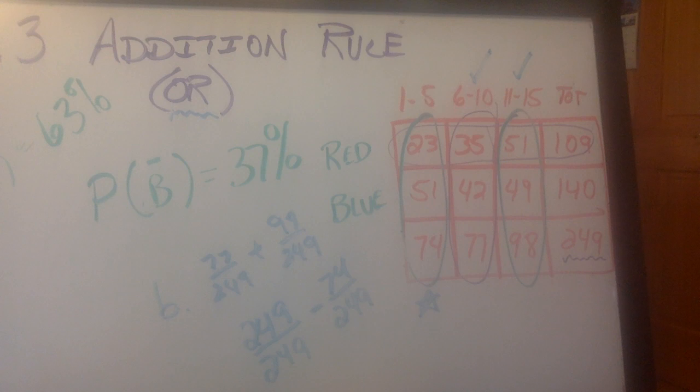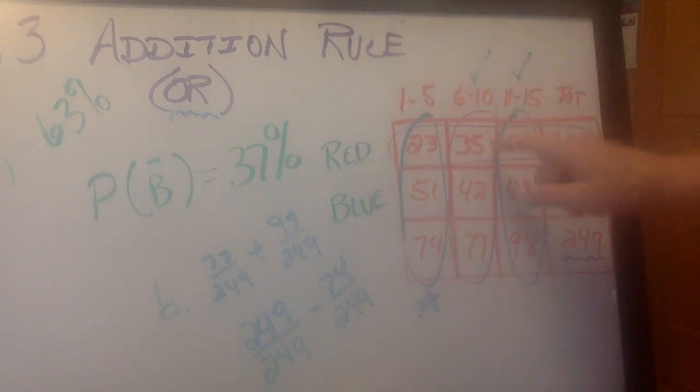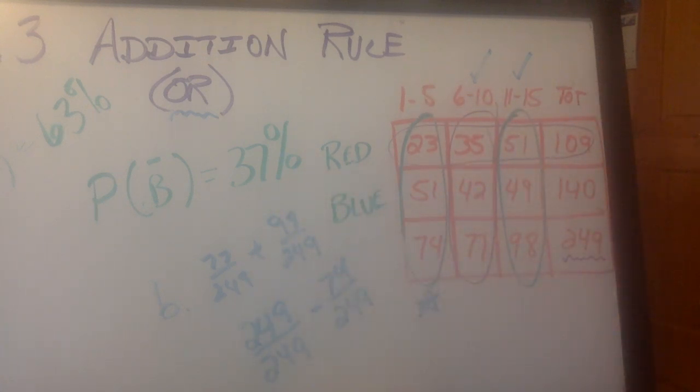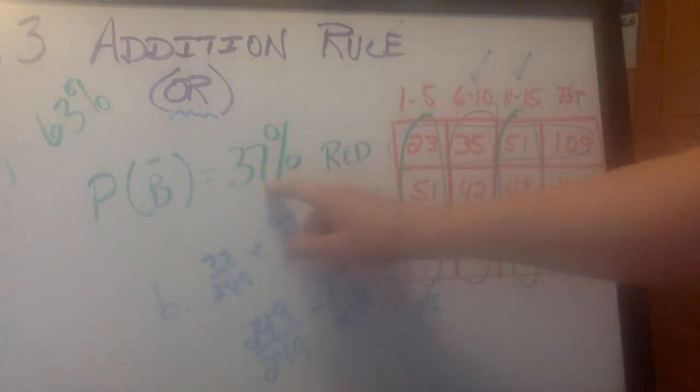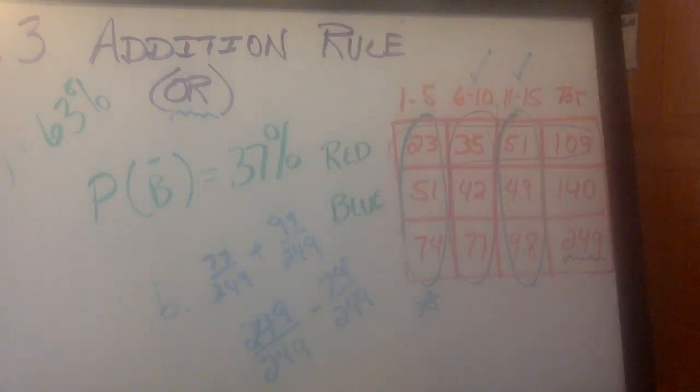To go over it again, really quick, the addition rule, the keyword is or. The question you always ask is, do these things overlap? And if they do overlap, I have to worry about subtracting. If they do not overlap, then I don't have to worry about subtraction. And the other part is the complement always adds up to one or a hundred percent.